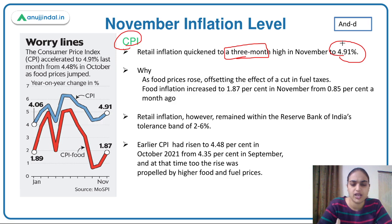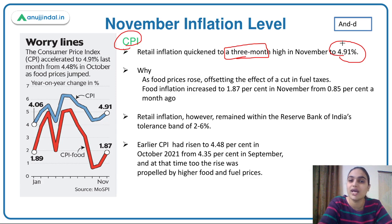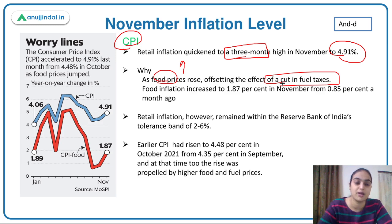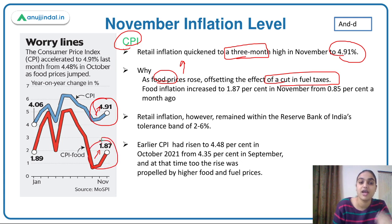Earlier it was expected that inflation might go down after a major cut in fuel-related taxes and prices. But we still see a three-month high value. The major reason behind the rise in CPI is food inflation. Food-related prices rose significantly, offsetting the effect of the fuel tax cut. Food inflation, which was 0.85 percent last month, rose to 1.87 percent in November — the primary driver of the CPI increase.